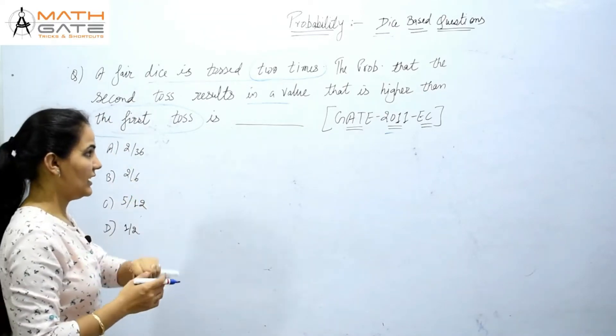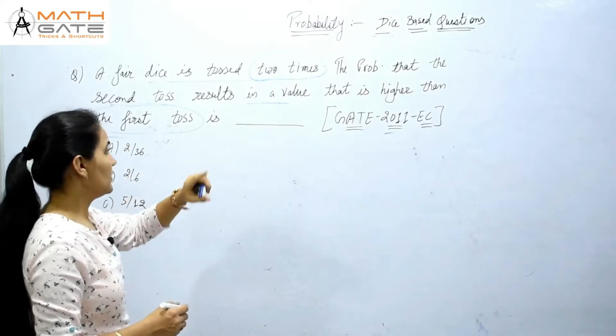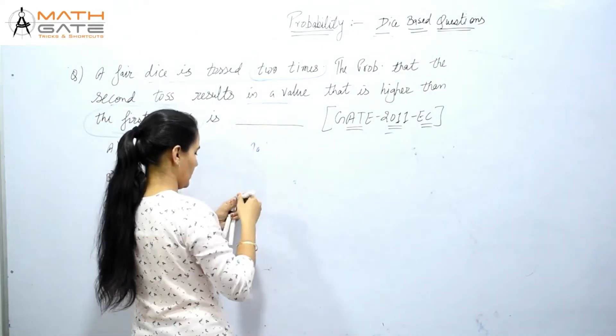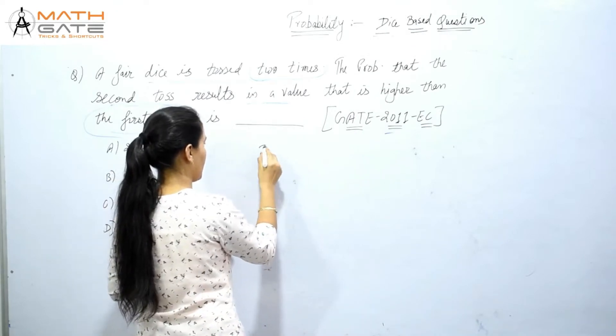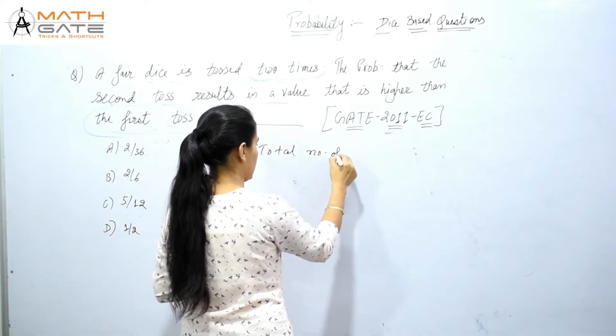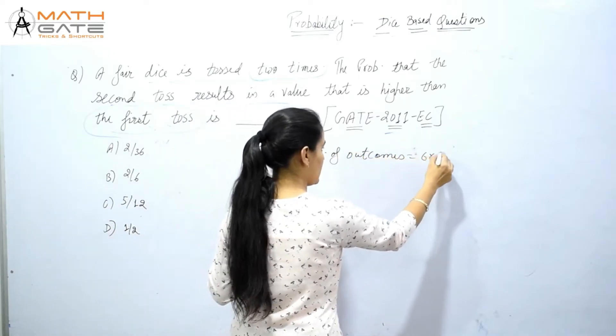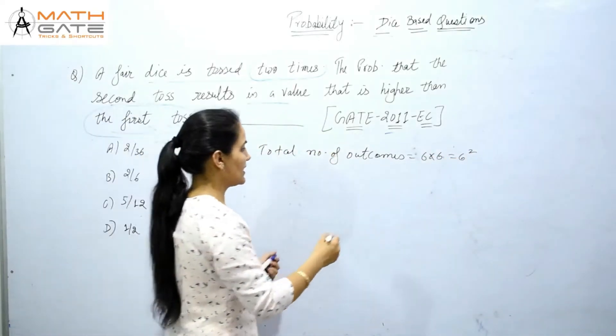A very good and simple question from 2011. Let's see what we have to do. One dice we have tossed two times. Total number of outcomes is equal to 6 into 6, or you can say 6 squared, which is 36.